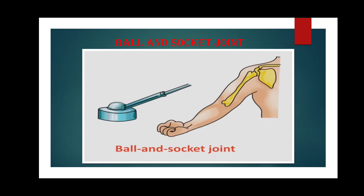Because of the ball and socket joint, you can rotate your hip — that is, the full leg — nicely. You can also rotate your shoulder fully clockwise and anti-clockwise, because this type of joint allows you to move in nearly all directions.